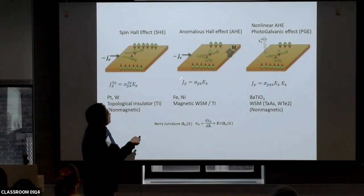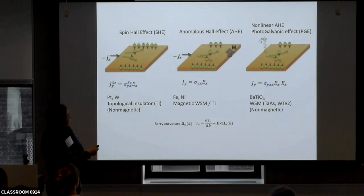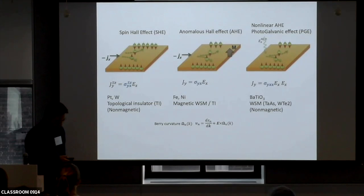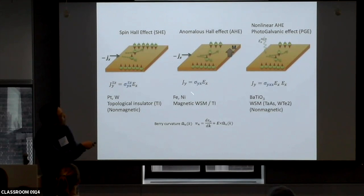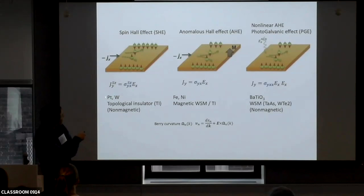This linear response goes to higher order. Supposedly the input is light, and then we can still get a DC current response. For example, there are intrinsic and extrinsic anomalous Hall effects. What I'm talking about is mainly the intrinsic property, dominated by the band structure. The anomalous Hall is well-studied in many magnetic materials — from simple magnets to magnetic Weyl semimetals and magnetic-doped topological insulators. For spin Hall, in the spintronics community, platinum is perhaps the most popular material and is used in many devices.